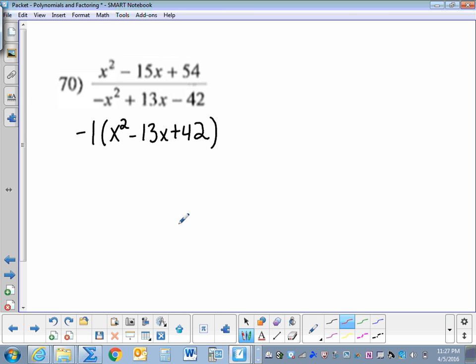Number 70, we have a trinomial divided by a trinomial. Here we have a leading coefficient that is negative. Go ahead and factor out the negative 1, then factor the numerator. Keep the negative 1 there, factor your denominator, and eliminate top to bottom.